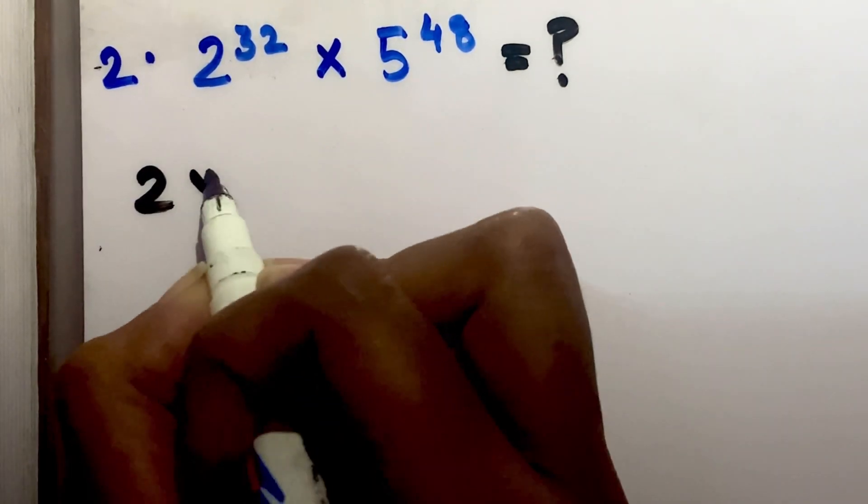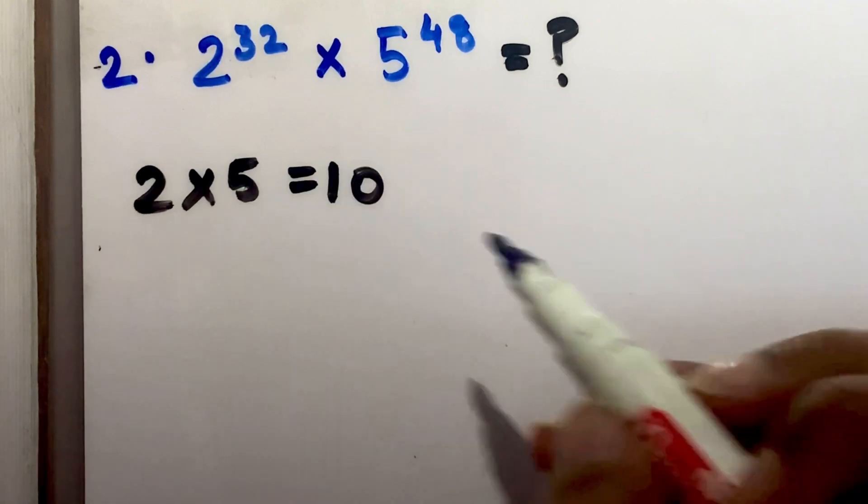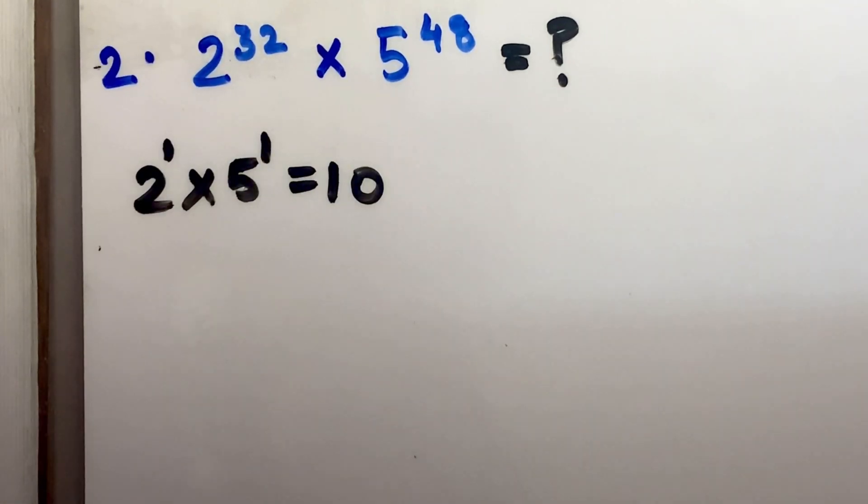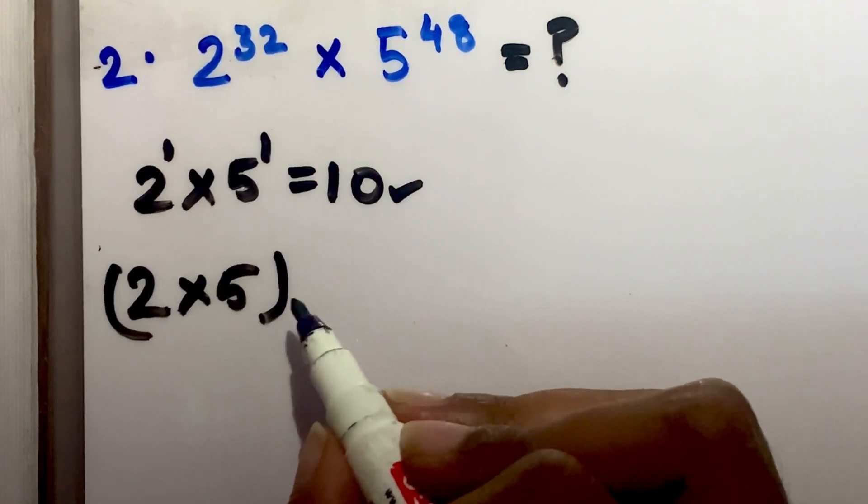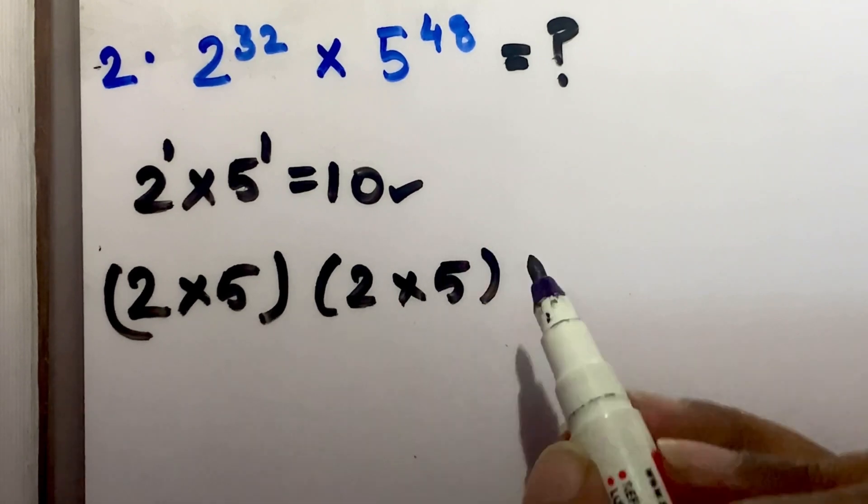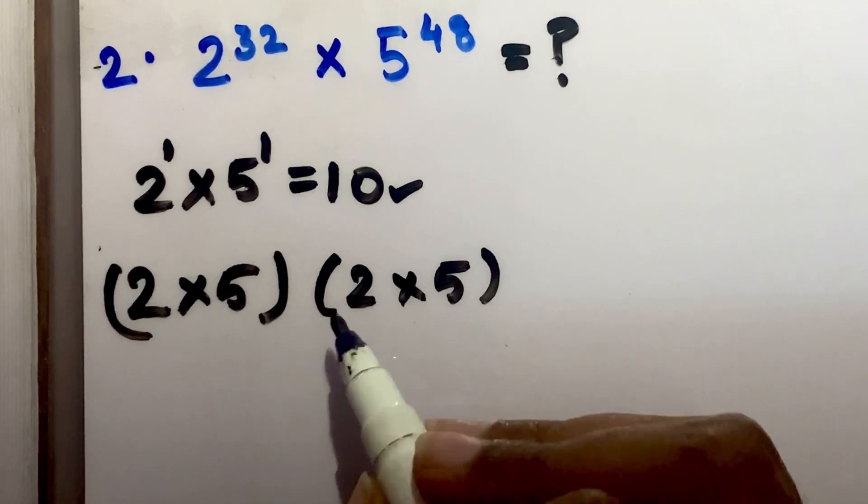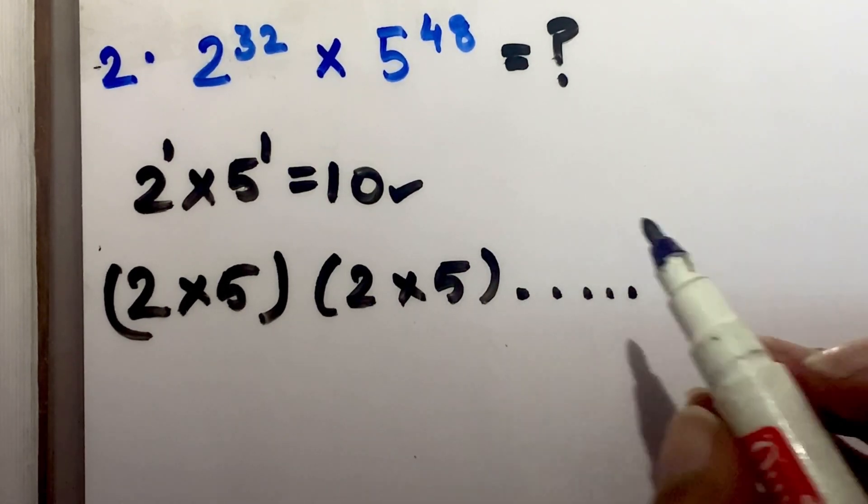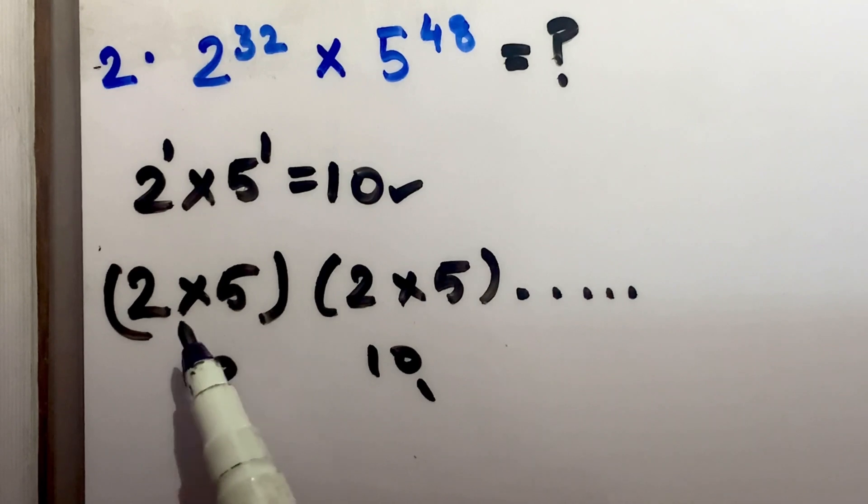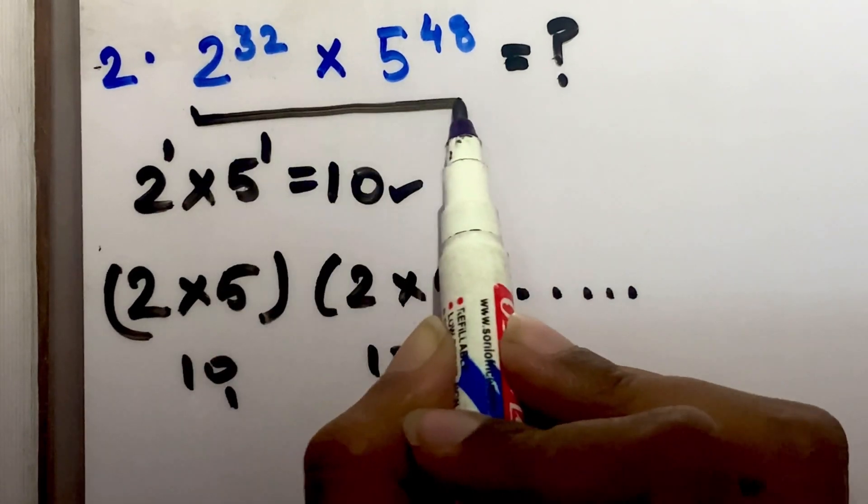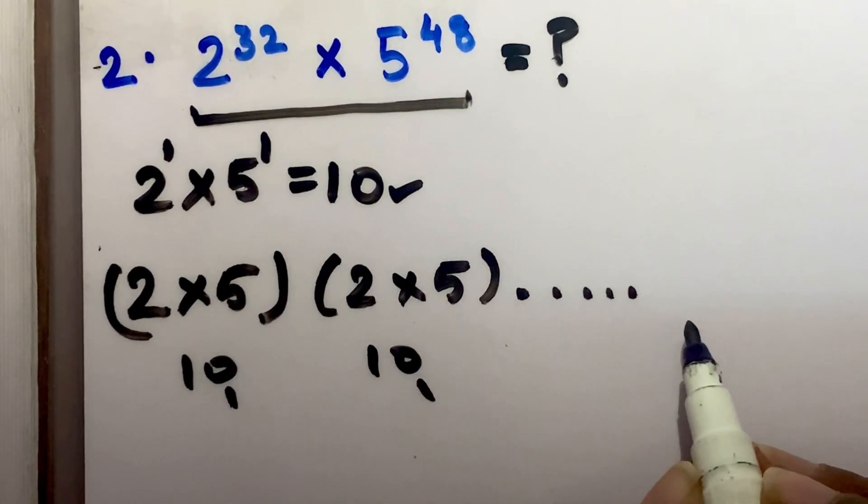Now we know that 2 into 5 is 10, correct? So 2 raised to 1 and 5 raised to 1 equals 10, which has 1 zero. If you keep multiplying pairs of 2 into 5, 2 into 5 in pairs, you get 10, 10, 10. So 1, 1, 1, 1, zeros add up. How many pairs of 2 into 5 can we get from this expression?